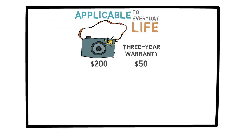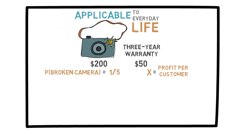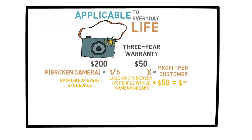Based on their own available statistics, the company estimates the probability of a camera being broken. In this case, it is 1 over 5, or 20%. If they sell the camera to 1,000 people, on average 200 of those cameras will break. Let X be the company's profit per customer. 4 out of 5 people will not break their camera, so they are simply gaining $50 from those customers. They lose $200 for every 1 out of 5 people whose camera breaks, but have collected only $50, so they lose $150 from each such person. The expected value of X is 50 times 4 over 5, minus 150 times 1 over 5, which equals $10.